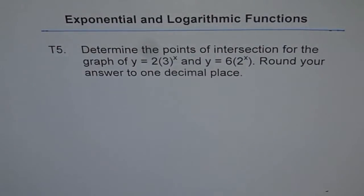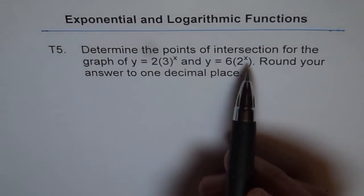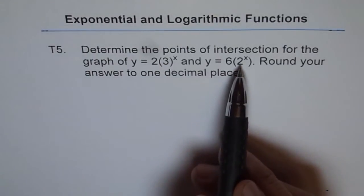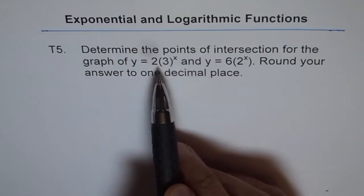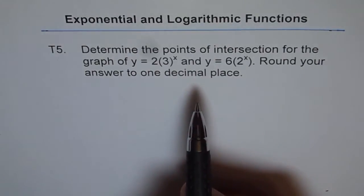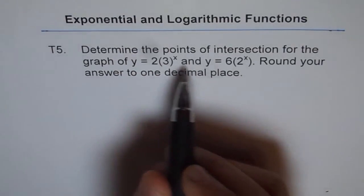When we say point of intersection, that means the y values will be the same for both these graphs at that point, right? So x and y values have to be same. Let's equate both their y values.